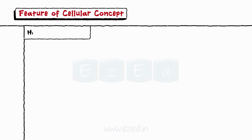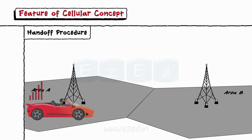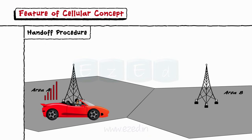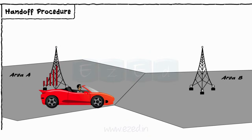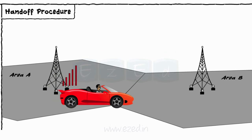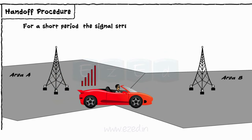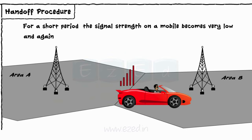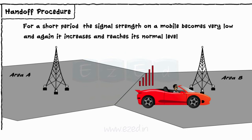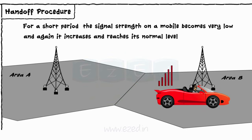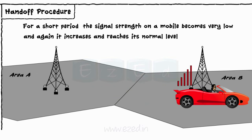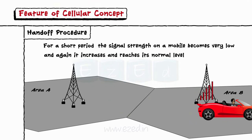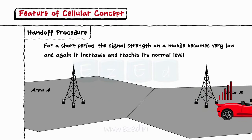Let's see what we mean by a hand-off procedure. Consider a situation where we are travelling from place A to place B by car. Sometimes it happens that for a short period of 2 or 3 seconds, the signal strength on mobiles becomes very low, and again it increases and reaches its normal level. Have you ever thought why this happens? The answer to this question is the hand-off procedure.